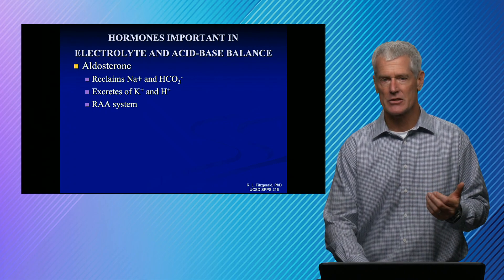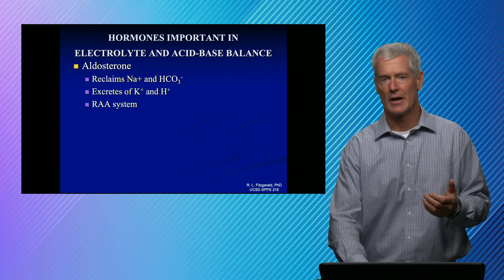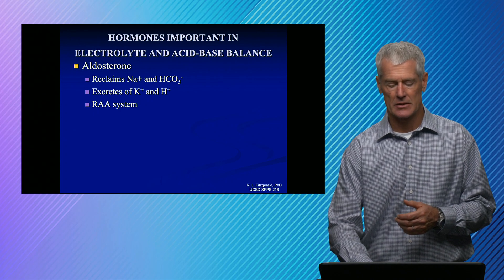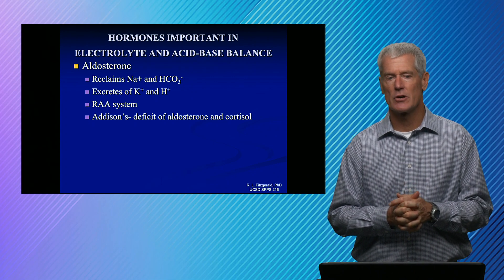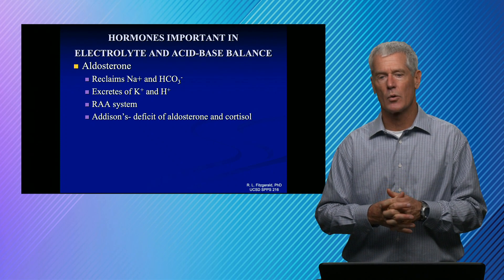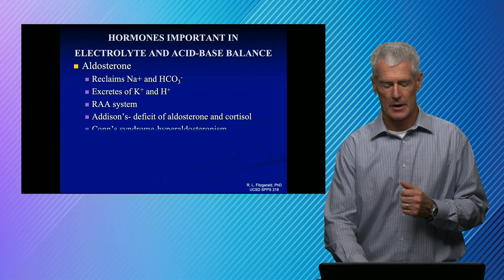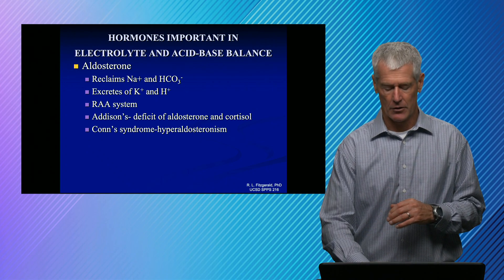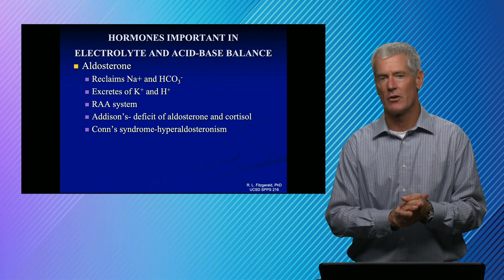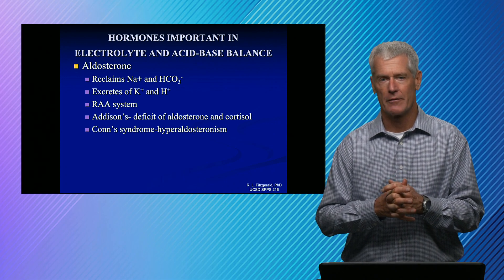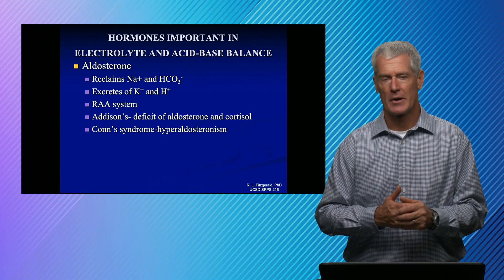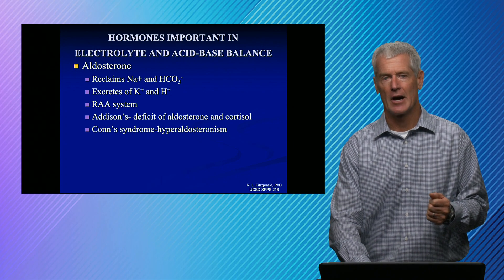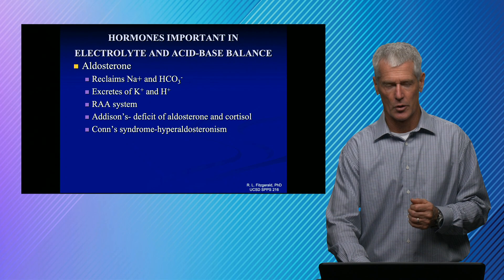Aldosterone is part of the renin-angiotensin-aldosterone system and is primarily renally regulated. Decreased GFR triggers renin secretion, which drives the system to aldosterone's four actions. Diseases associated with aldosterone include Addison's disease — autoimmune destruction of the adrenal cortex, losing both aldosterone and cortisol — and Conn's syndrome, primary hyperaldosteronism from a tumor secreting excess aldosterone. Notably, aldosterone has weak glucocorticoid effects, and cortisol has weak mineralocorticoid effects, so hypercortisolism shows aldosterone-like behavior, and hyperaldosteronism can cause hyperglycemia.